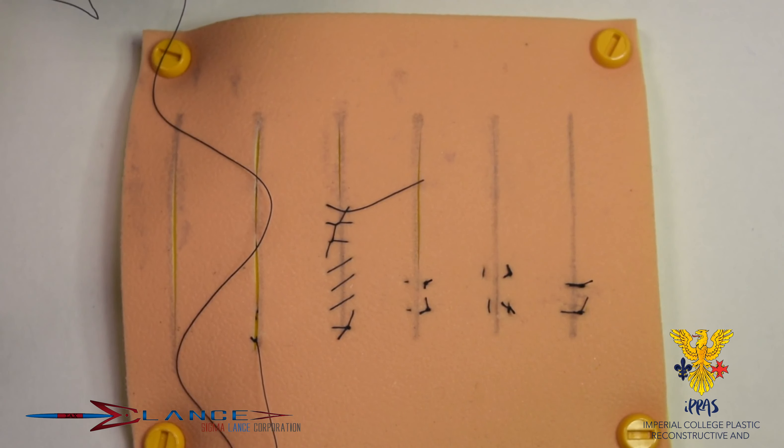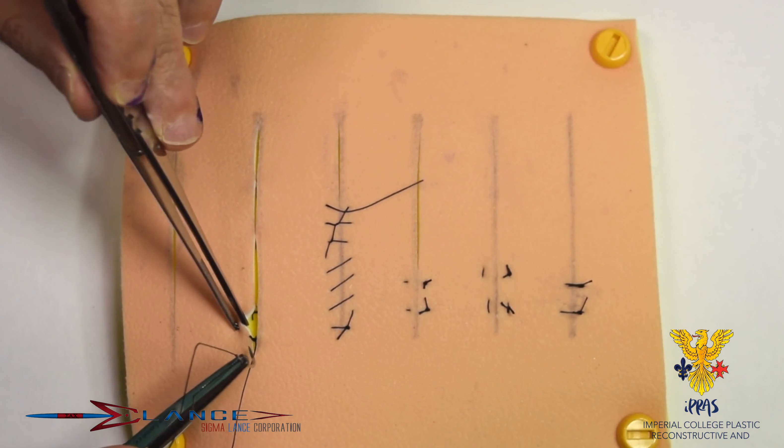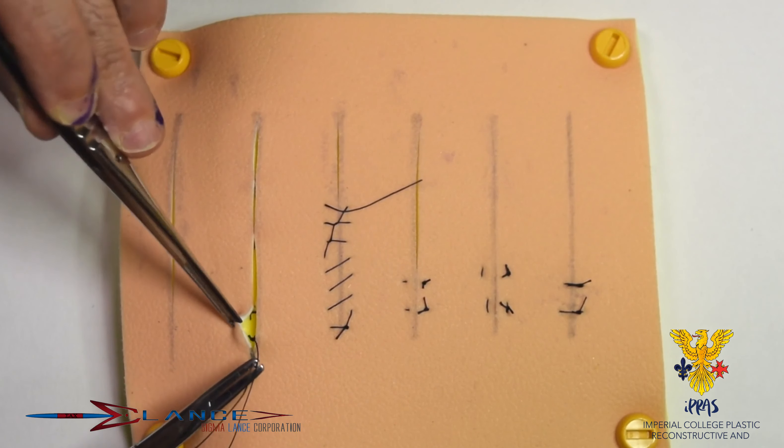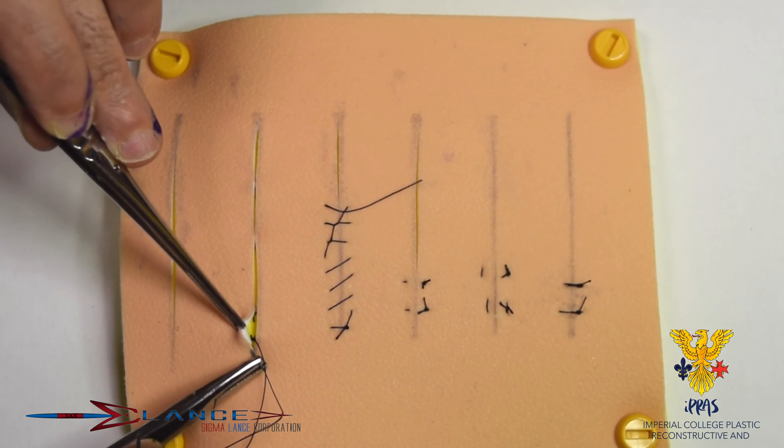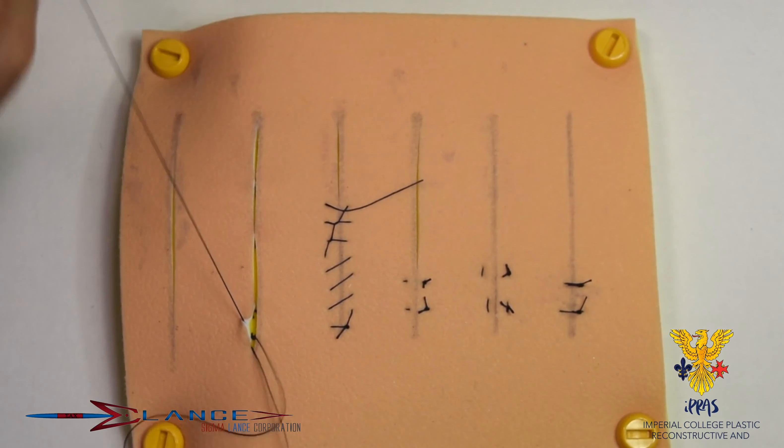And the suture then will proceed essentially in a horizontal mattress fashion, and they have to be squares. So you grab, you must stay in this dermal layer, which is this white layer shown beautifully on this model, and essentially pull through.